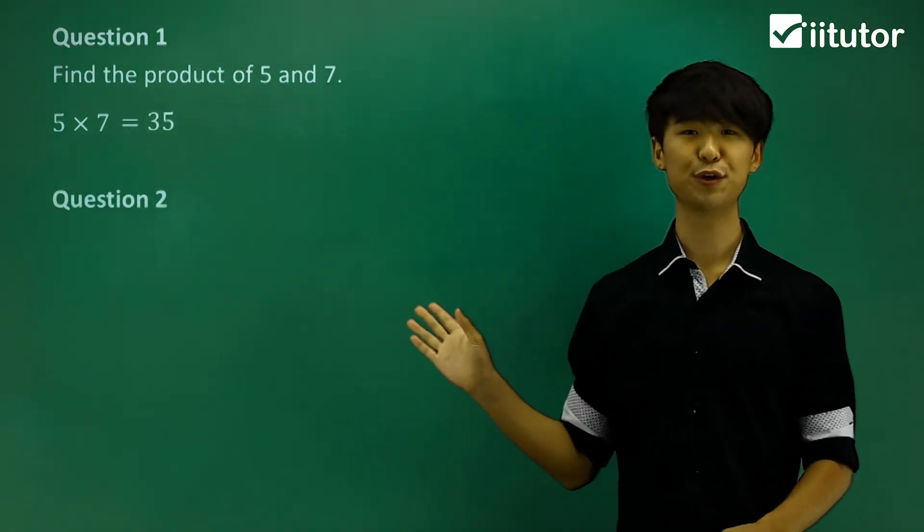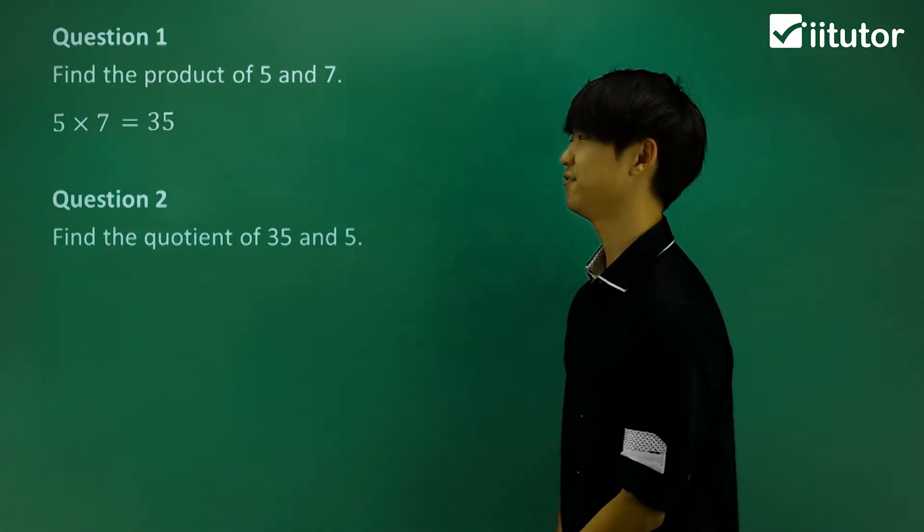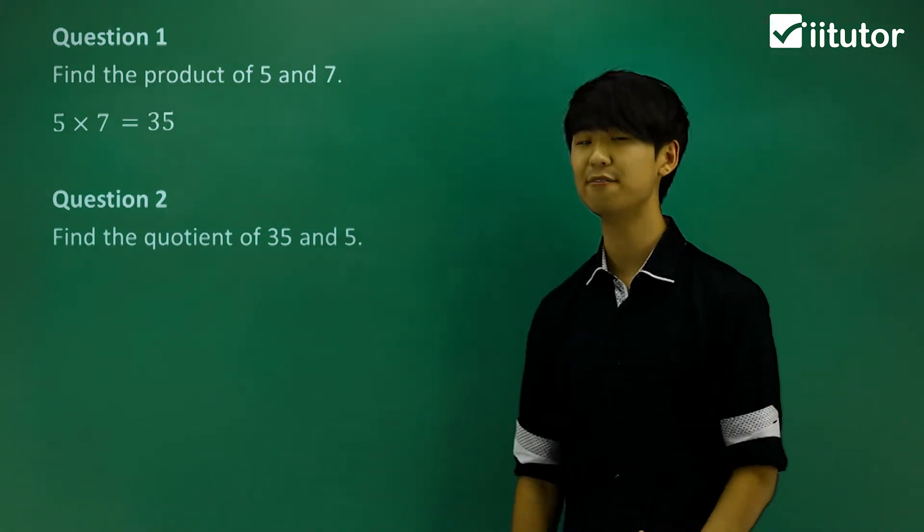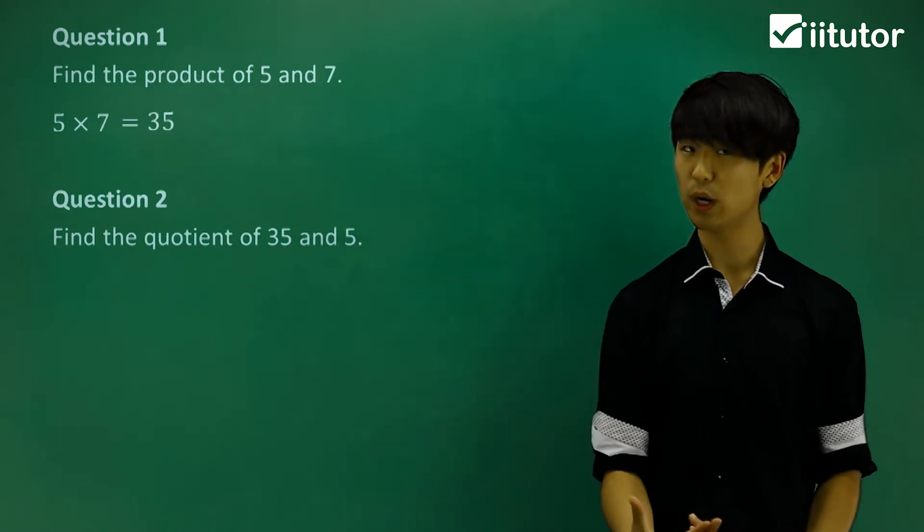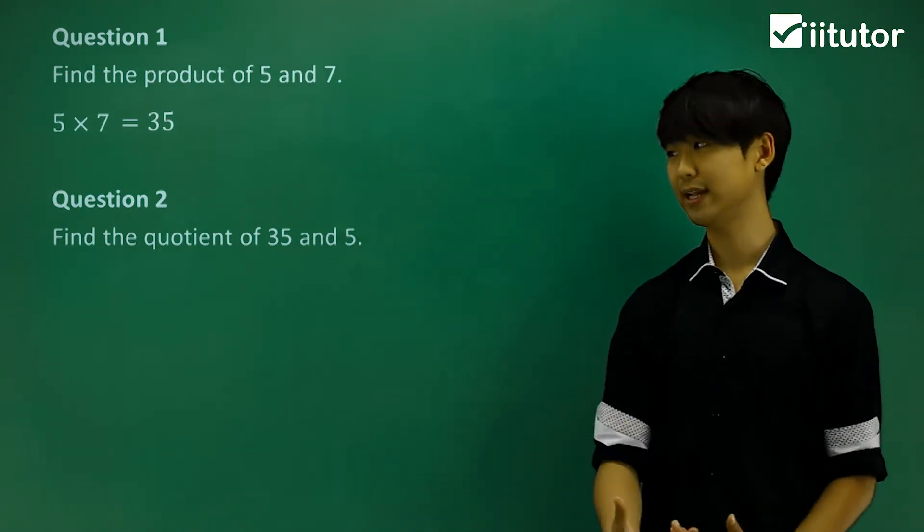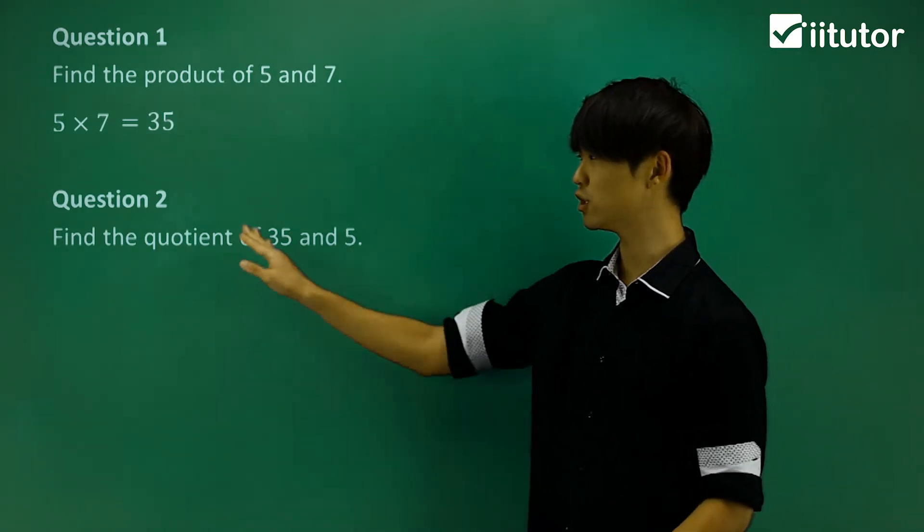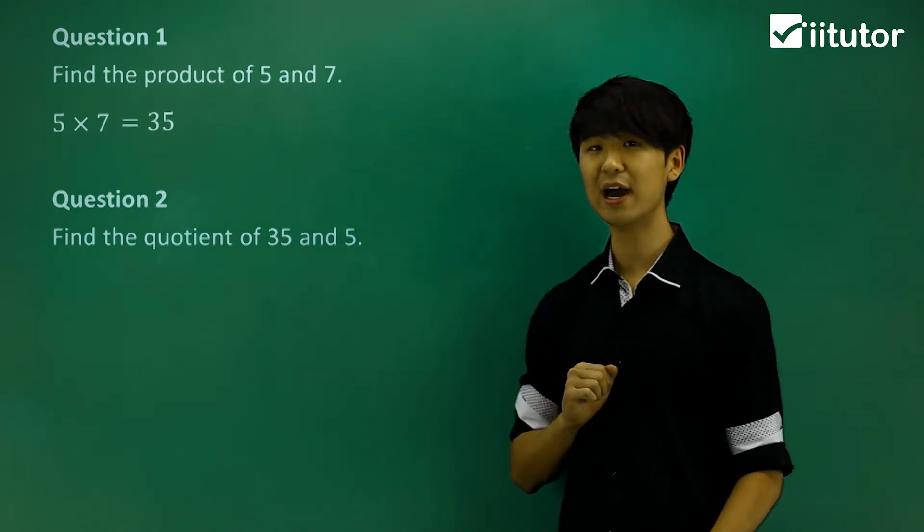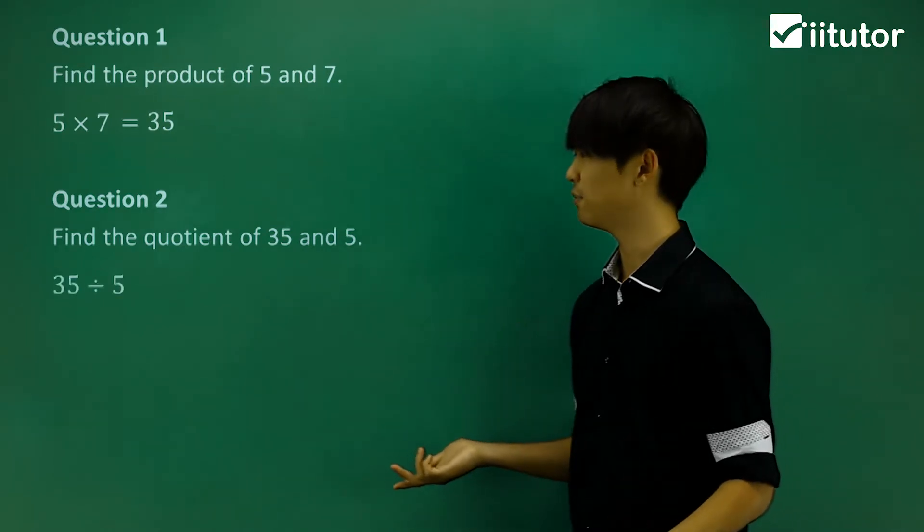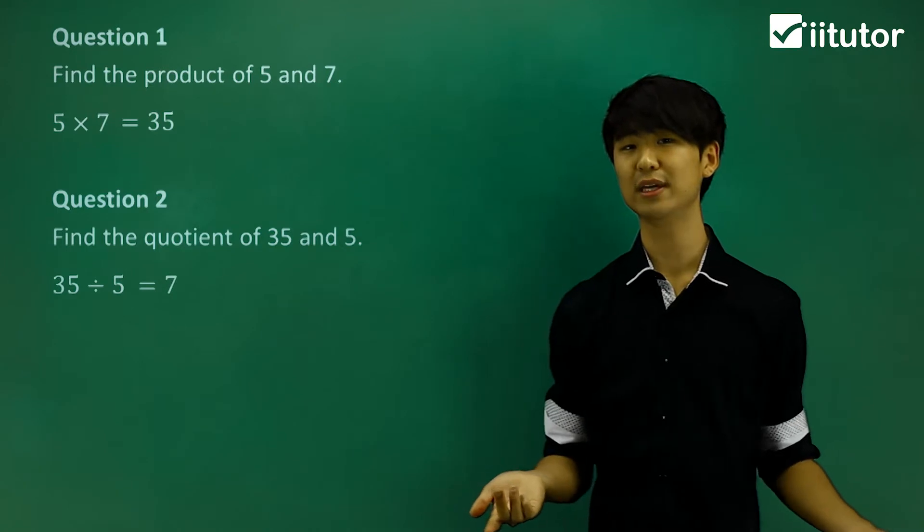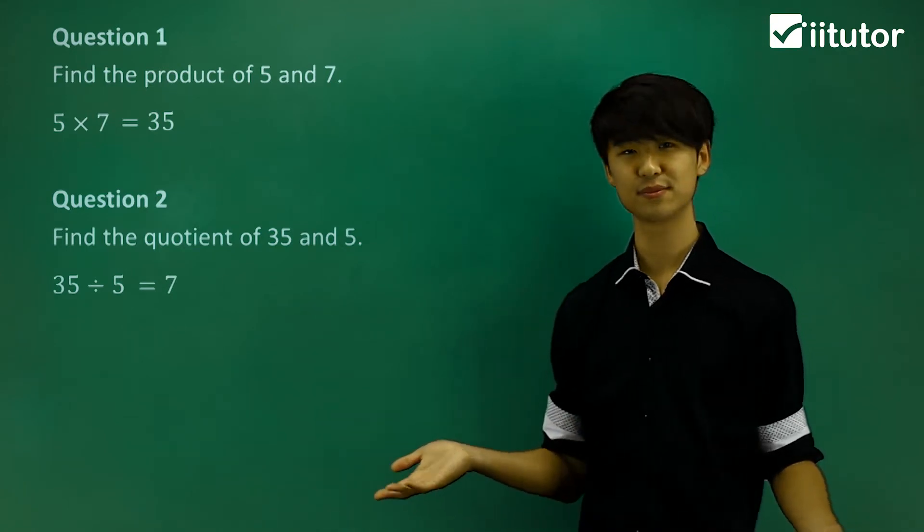Now in question two, find the quotient of thirty-five and five. Again, quotient is what? Quotient is related to division. So finding the quotient of thirty-five and five, we'll do thirty-five divided by five, which will give me a value of seven. So not too difficult.